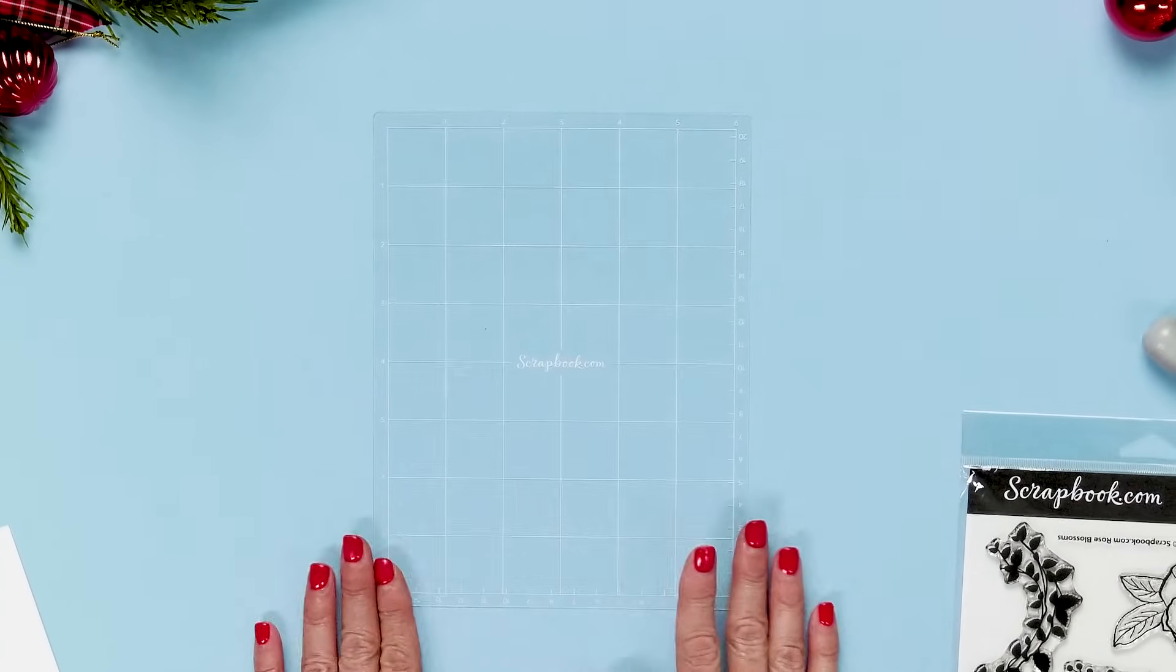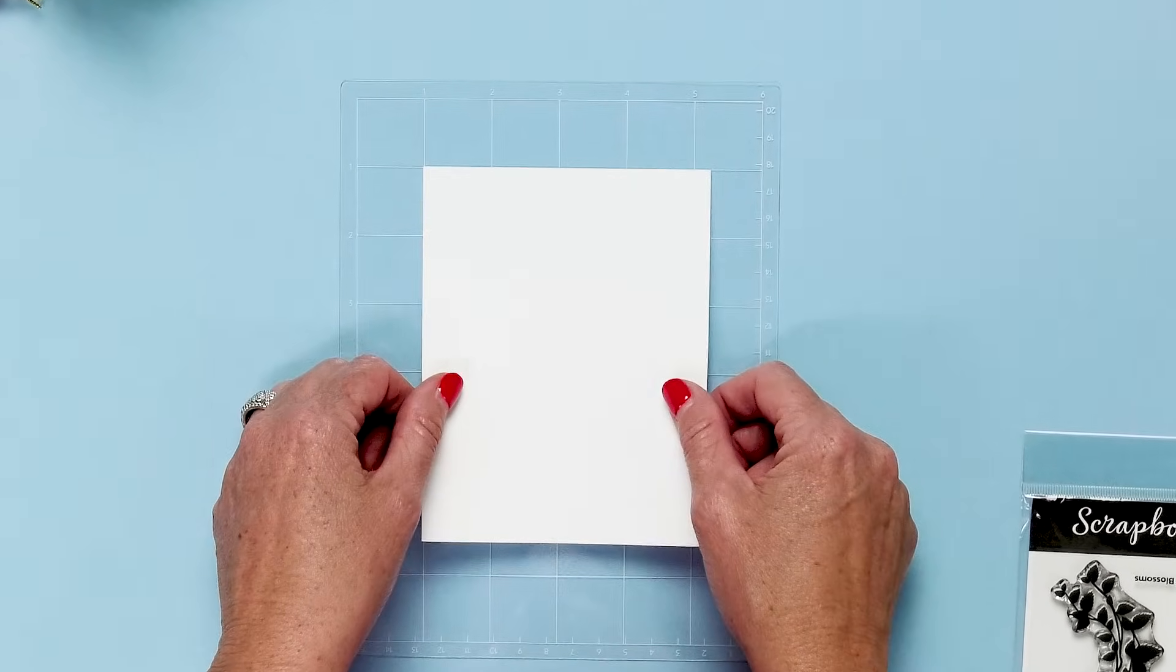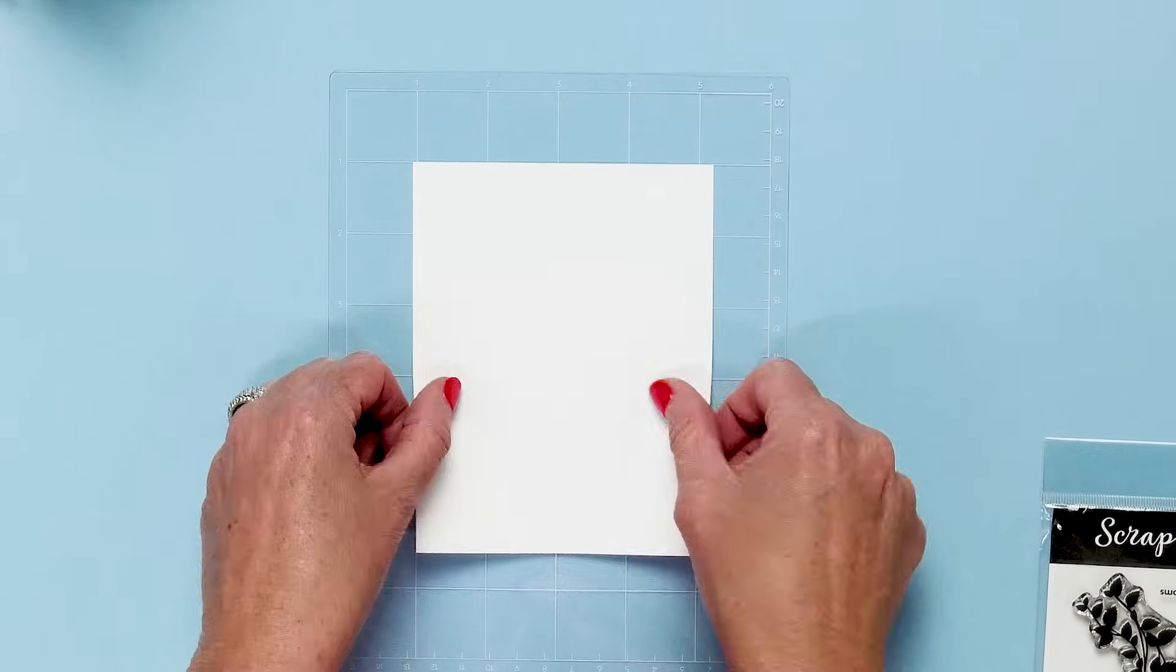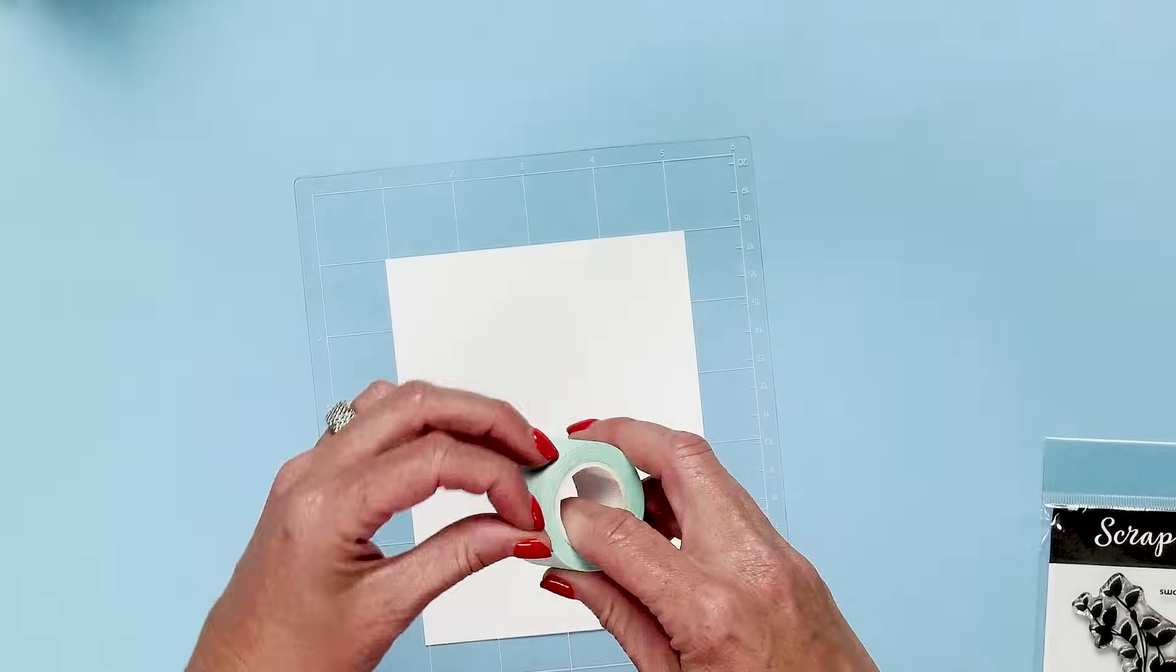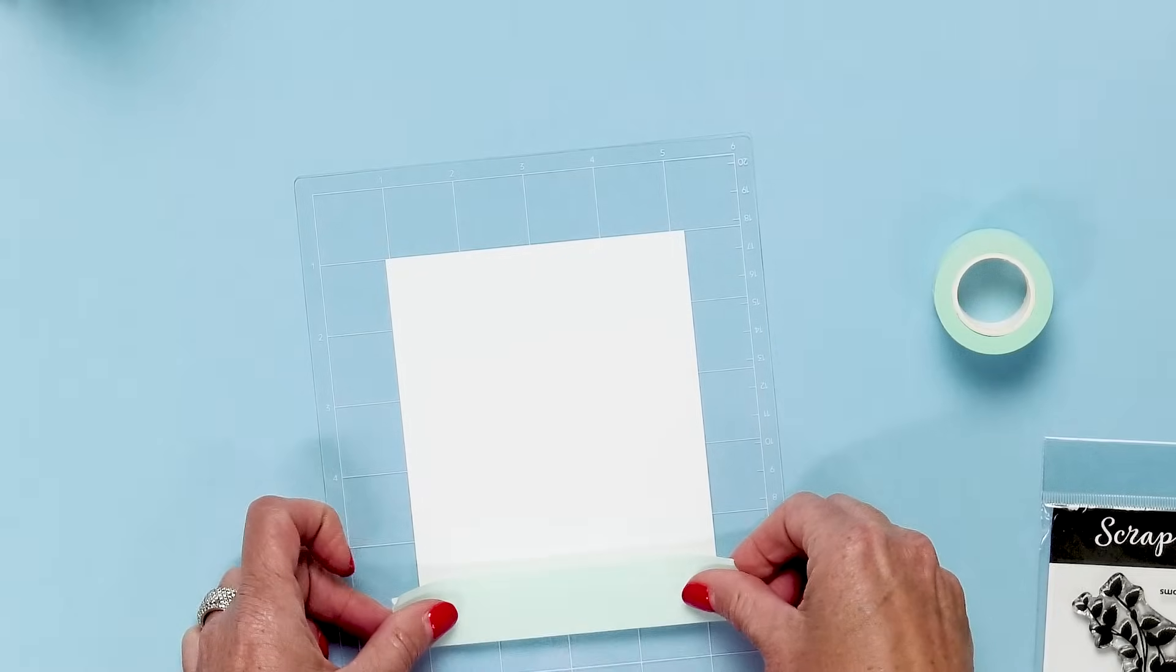It's low tack and I'm going to stick my card base right on here and center it with the grids. Then we're going to take some mint tape because I'm going to mask off all the edges of this card.